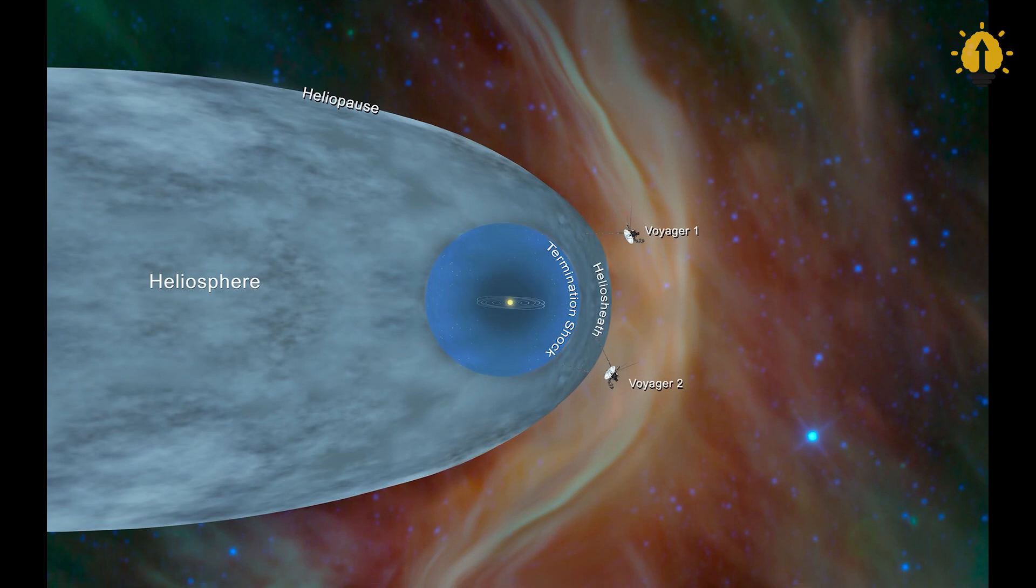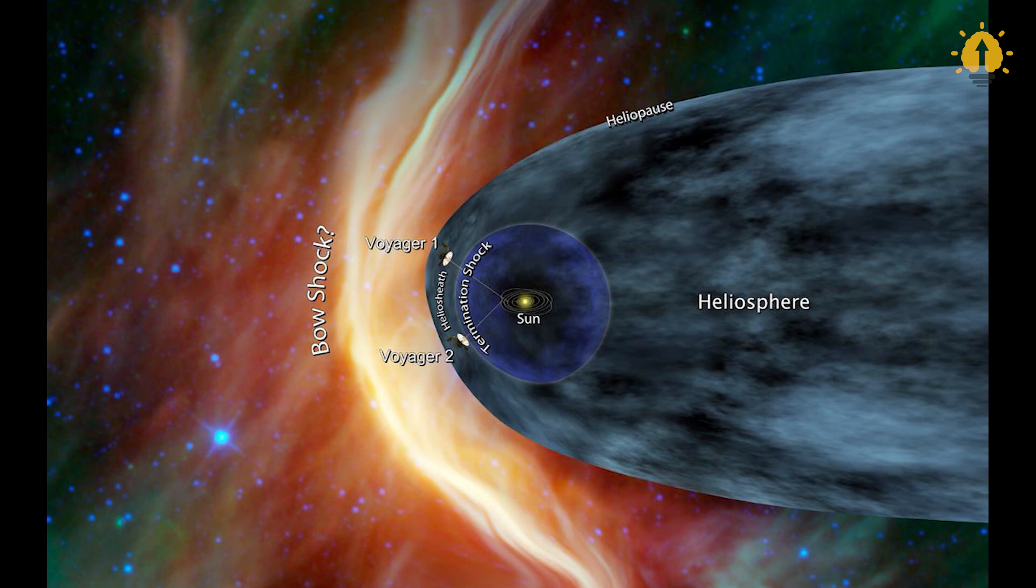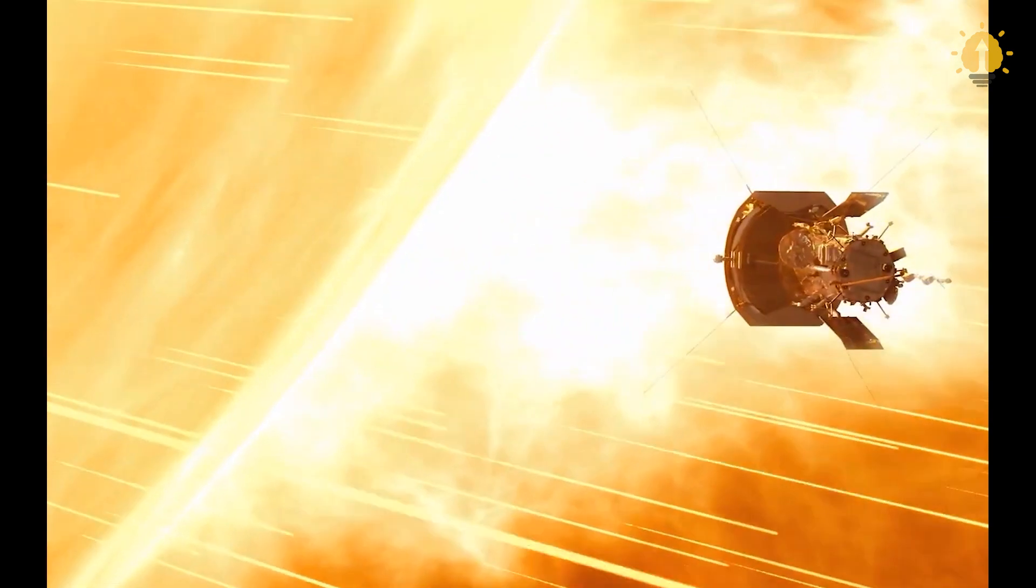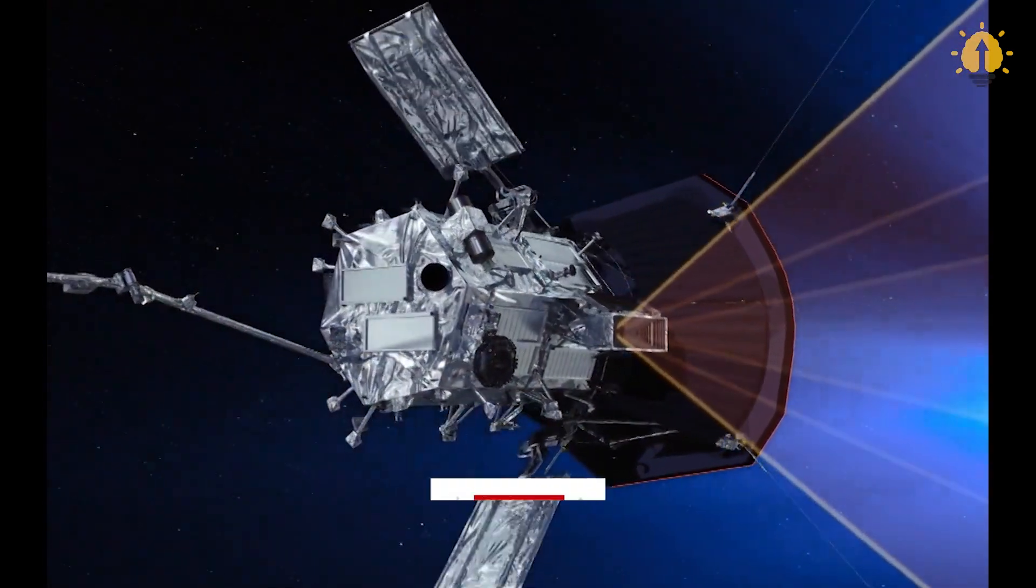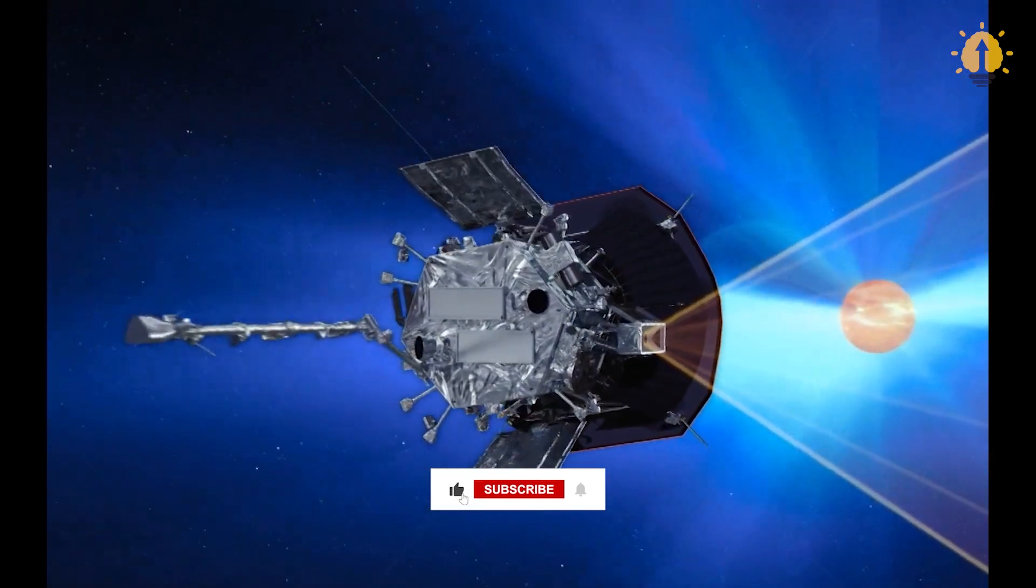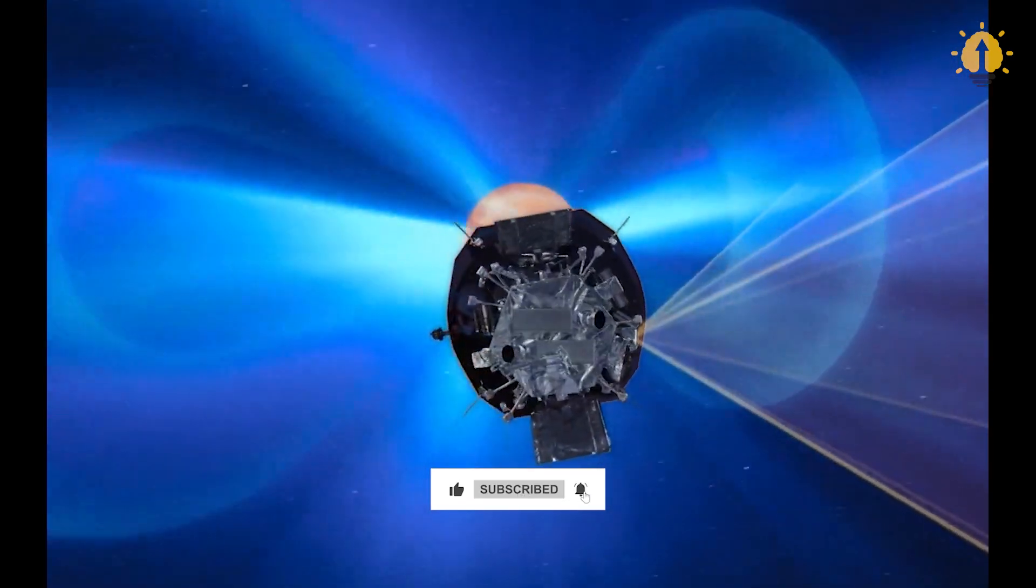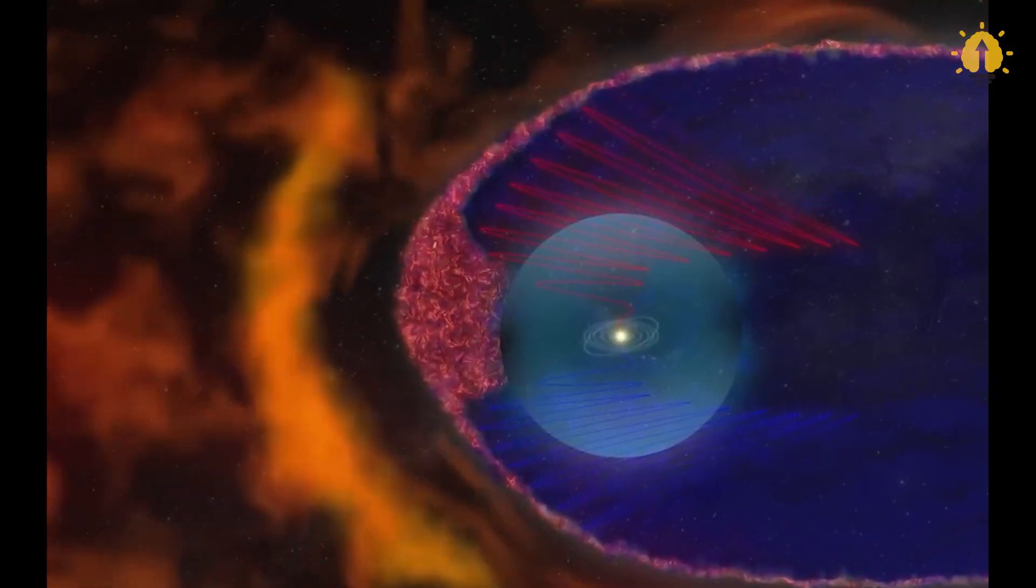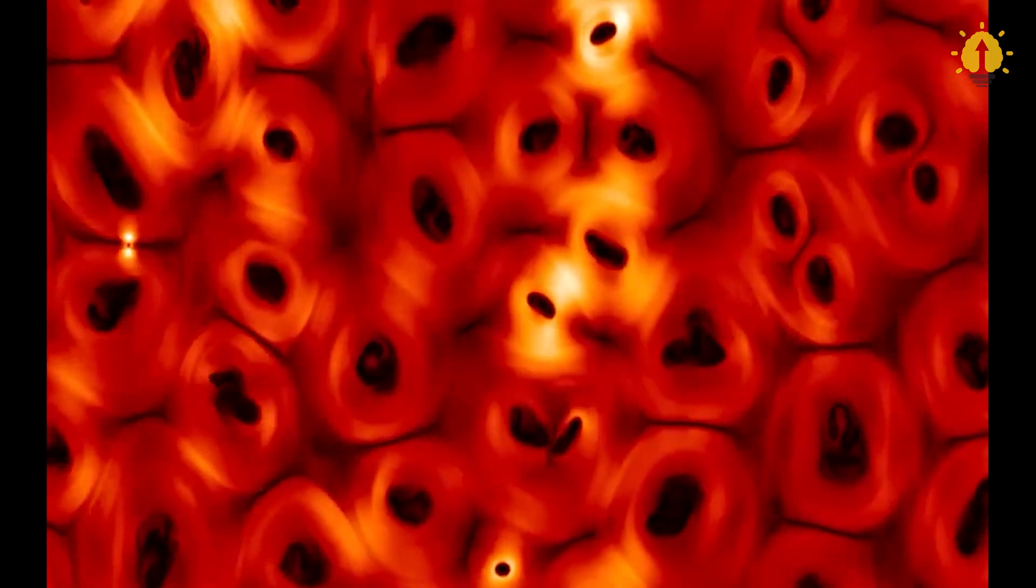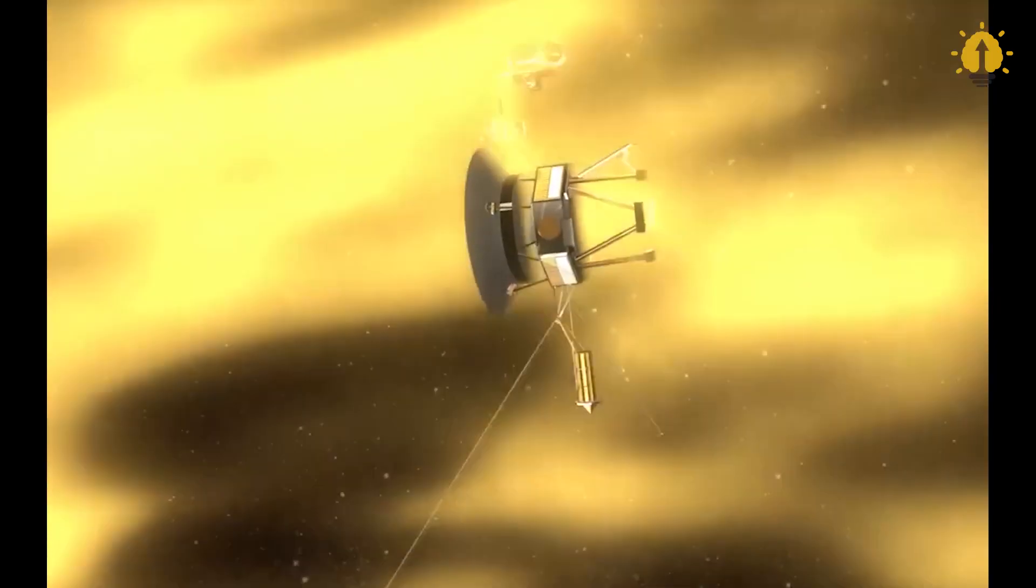Theoretical models predicting the behavior of the Heliosphere and its interaction with the interstellar environment faced challenges due to these unexpected observations. The Heliosphere was expected to fluctuate in sync with the Sun's 11-year cycle, but this did not align with the data gathered by the Voyagers. The solar wind, which ebbs and flows with the Sun's cycle, was at its strongest when Voyager 2 arrived at the Heliopause. The predicted position of the Heliopause should have been further out than 120 AU, adding another layer of complexity.